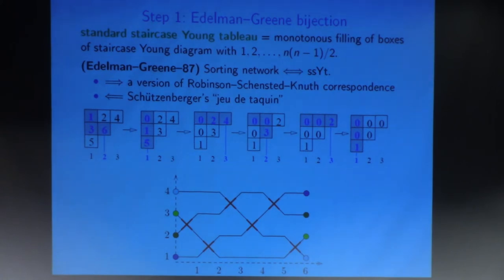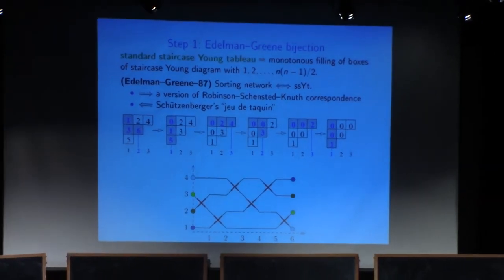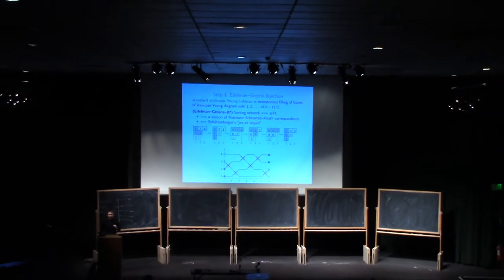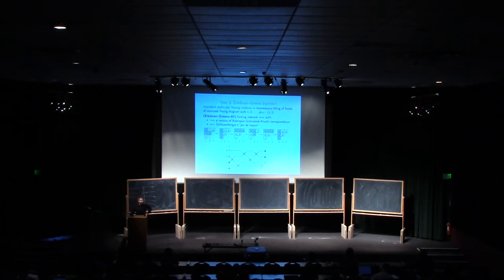What Edelman and Green proved is that they constructed an explicit algorithm providing a bijection between sorting networks and these Young Tableaux. There are two directions in this bijection — you can start with a sorting network or start with a Young Tableau. If you start with a sorting network, the algorithm is really a version of the Robinson-Schensted-Knuth correspondence with slightly modified rules. In the opposite direction, the correspondence is a version of the so-called Jeu de Taquin, and it's closely related to the algorithm we saw in the limit.